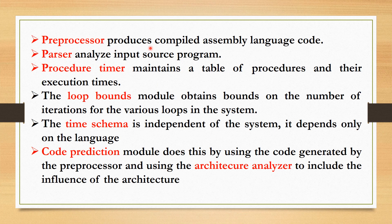The preprocessor produces compiled assembly language code. The parser analyzes the source code. The procedure timer maintains a table of procedures and their execution times. The loop bound module obtains a bound on the number of iterations for the various loops in the system. The time schema is independent of the system and depends only on the language. Using the code prediction module, the code generated by the preprocessor can be predicted, and using the architecture analyzer, the execution time can be estimated based on which architecture has been used.